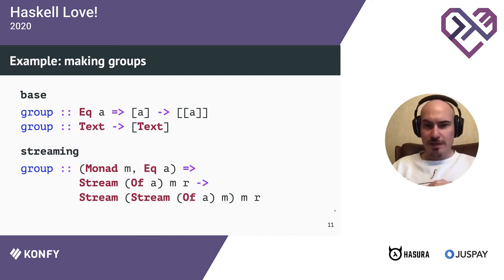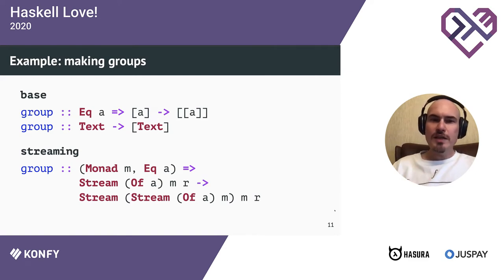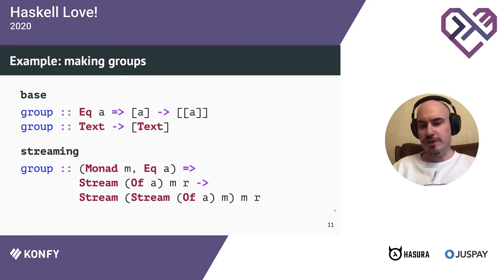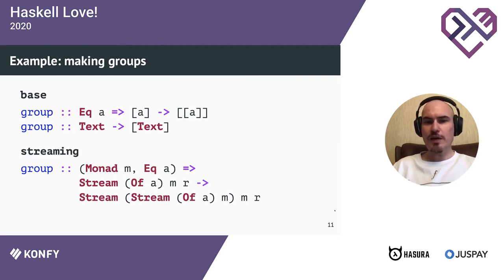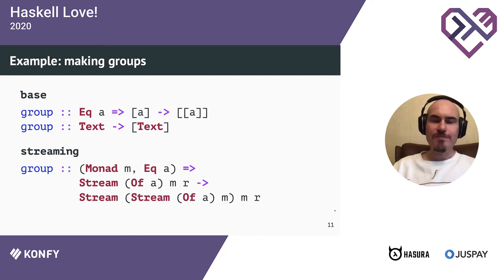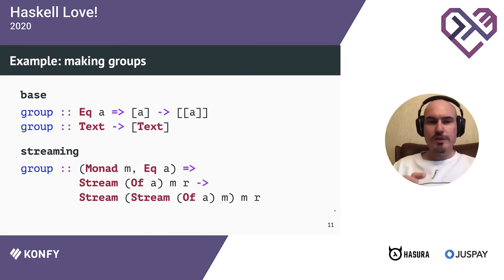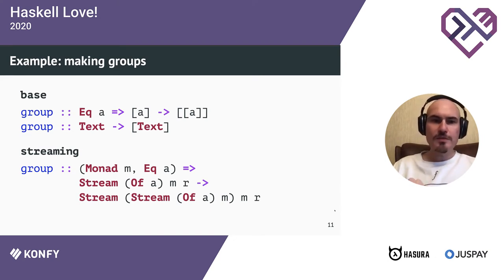Now let's look at the streaming library - an instrument that allows list-like processing in constant memory without too much laziness, used for efficient implementations. When we look at the type of the groupBy function in the streaming library, we see familiar things: an Eq constraint, a Stream of 'a' instead of a list, and a monad. The author of this library introduces one new abstraction - Stream - as the main specific abstraction.